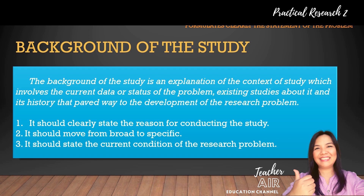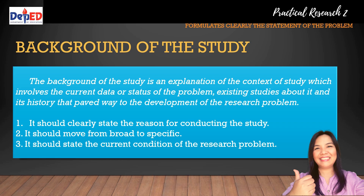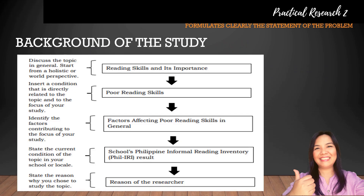Background of the study is an explanation of the context of the study, which involves the current data or status of the problem, existing studies about it, and its history that paved the way to the development of the research problem. It actually explicates the rationale why you as a researcher are conducting the study. Writing this part of the paper may lead you to your research questions. As you write the background of the study or introduction, consider these guidelines: number one, it should clearly state the reason for conducting the study; number two, it should move from broad to specific; and number three, it should state the current condition of the research problem.